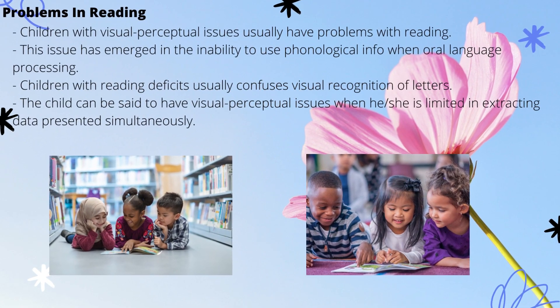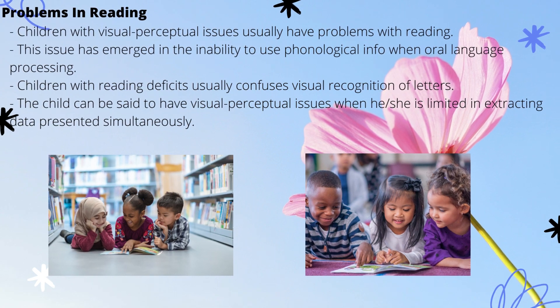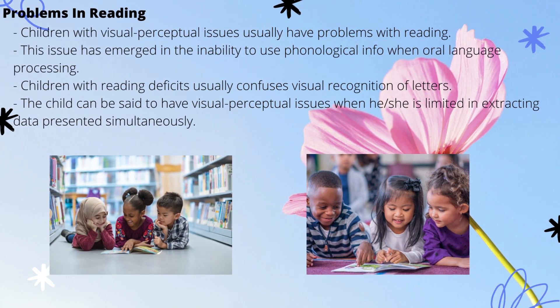Now coming to the problems in reading. Children with visual perceptual problems usually have problems with reading and struggle with it most of the time. This issue has emerged in the ability to use phonological information when oral language processing. Children with reading problems usually confuse the visual recognition of letters — they may be confused with few letters like P and B, and so on.